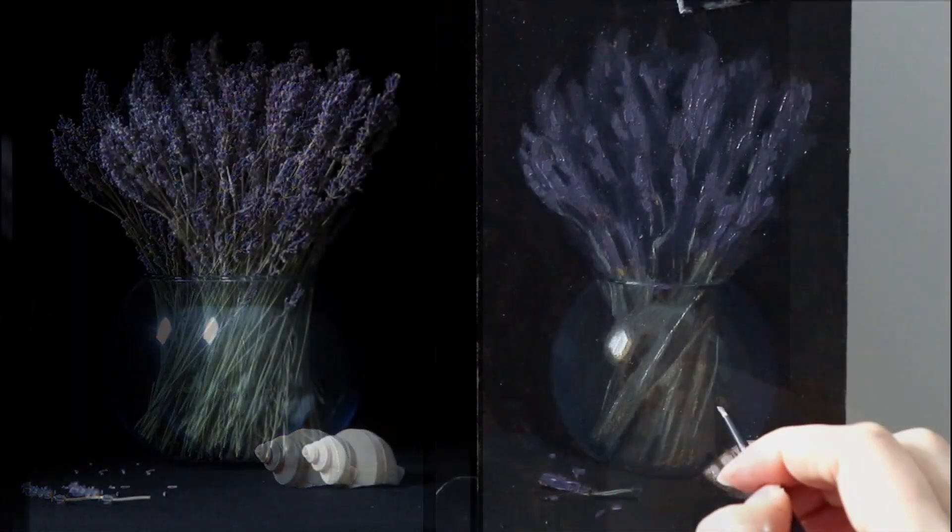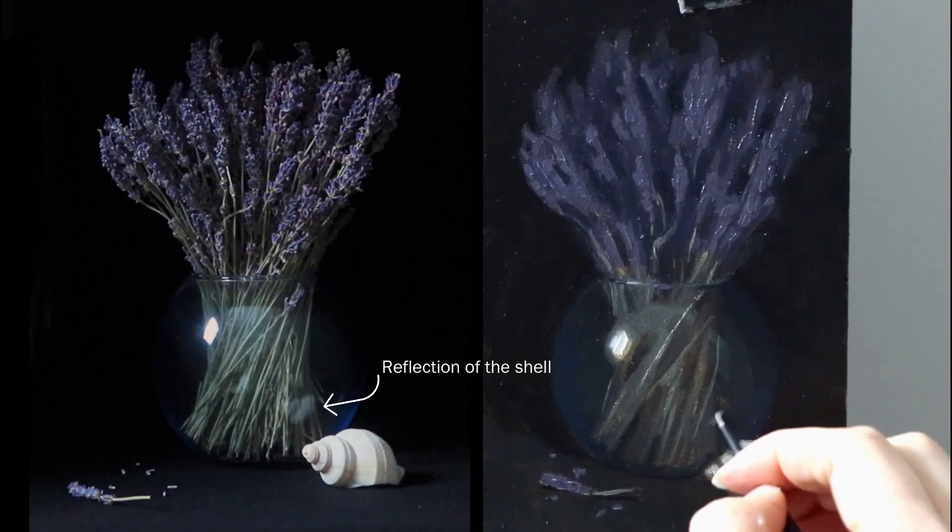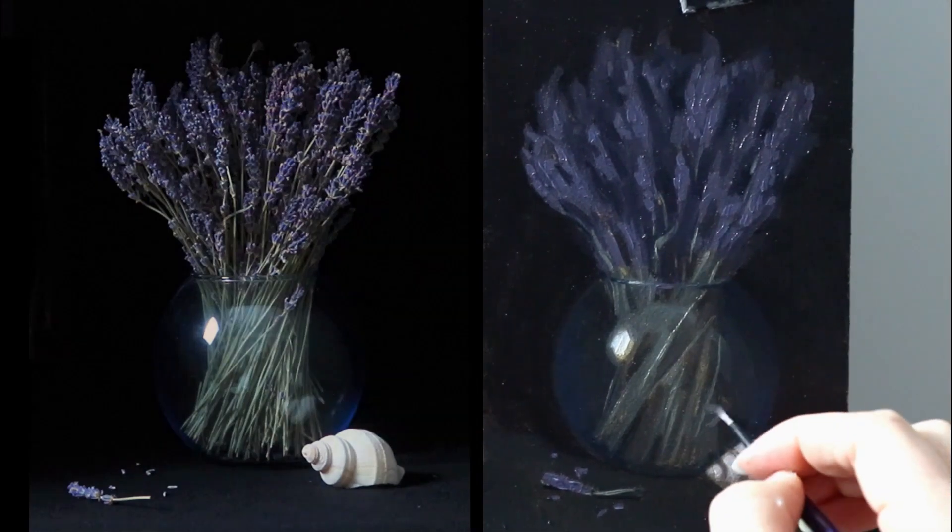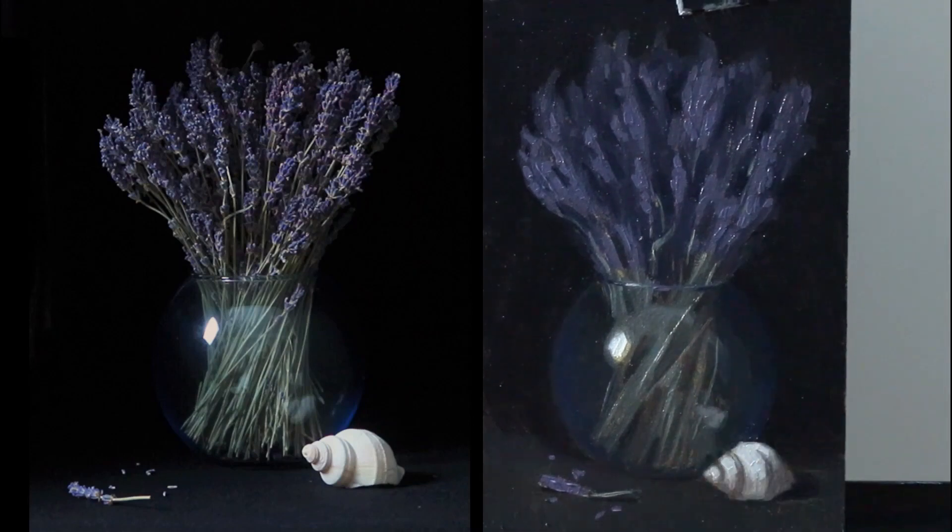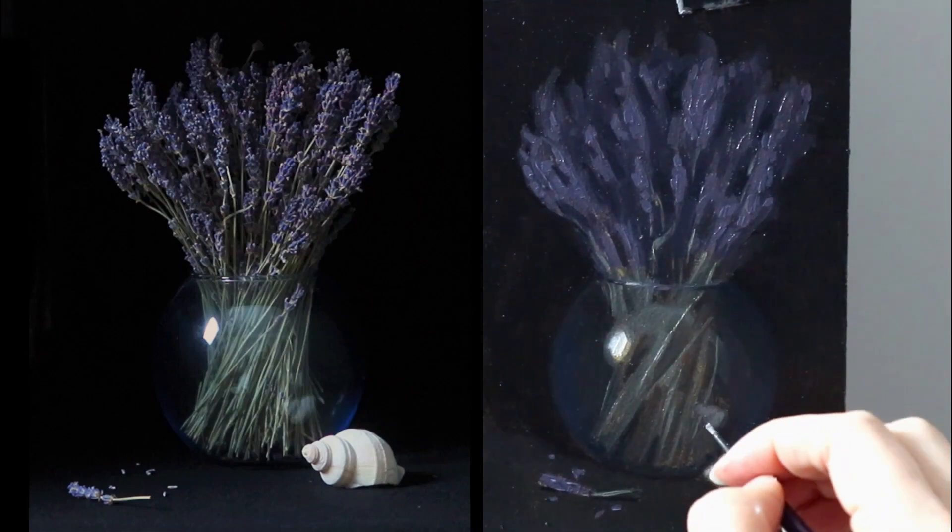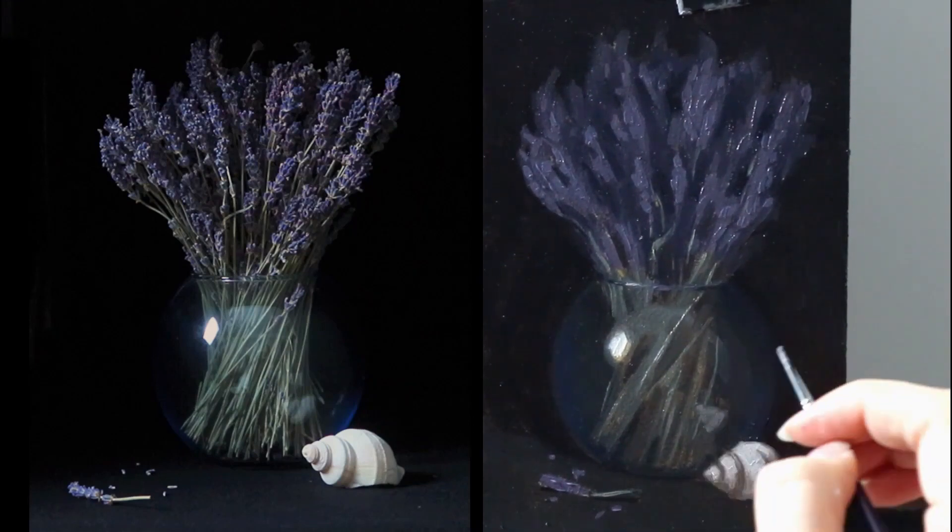The very last thing I do is to add in the reflection that the seashell is casting in the vase. This reflection is also going to help convey the glass texture of the vase, and to paint it to study the value of it is a good thing to do before painting the main image.